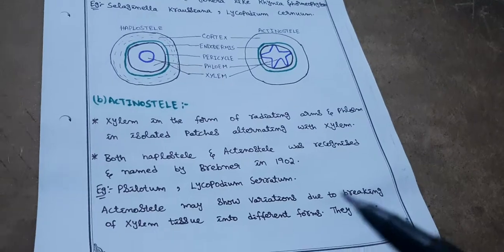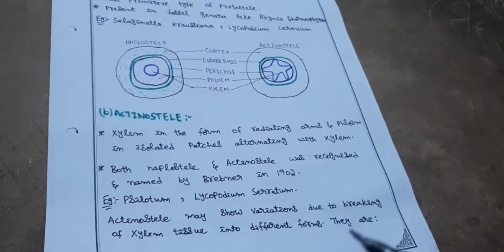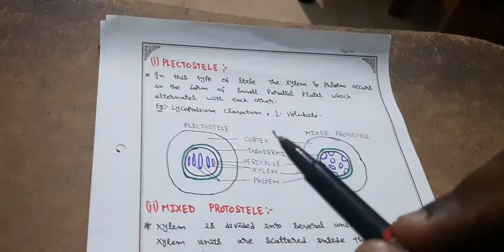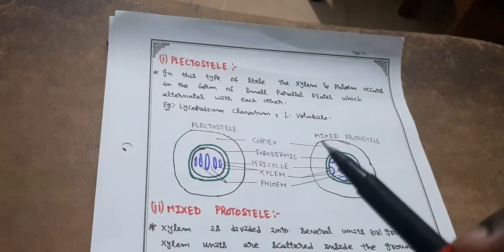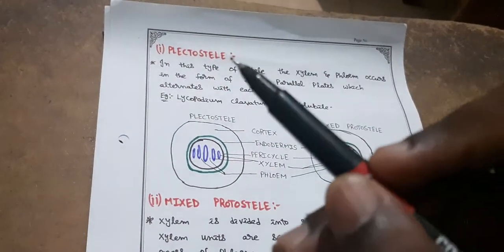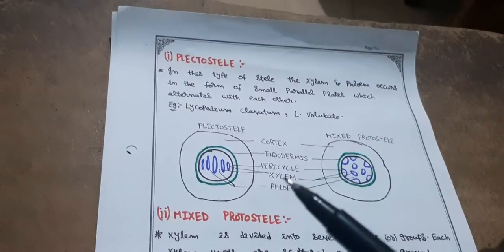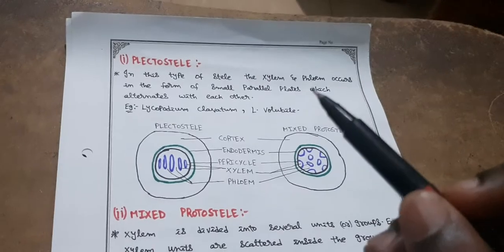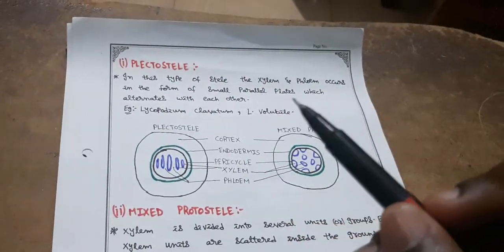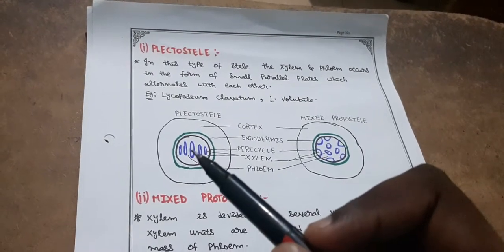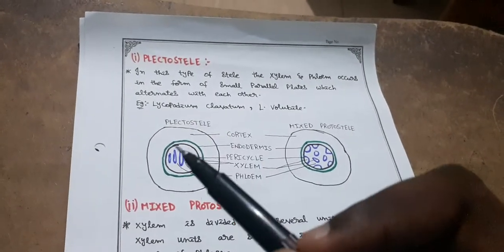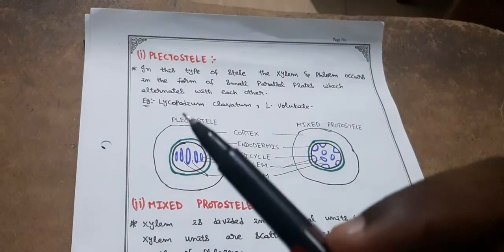Actinostele may show variations due to breaking of xylem tissue into different forms. There are three further types: plectostele, mixed protostele, and mixed protostele with pith. Some authors say these are subdivisions of actinostele. In plectostele, xylem and phloem occur in the form of small parallel plates alternating with each other.